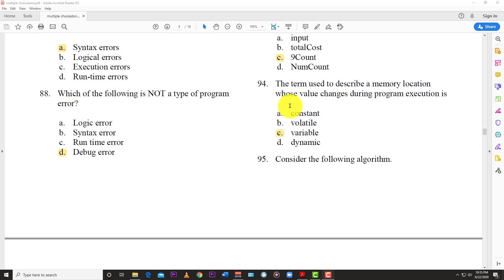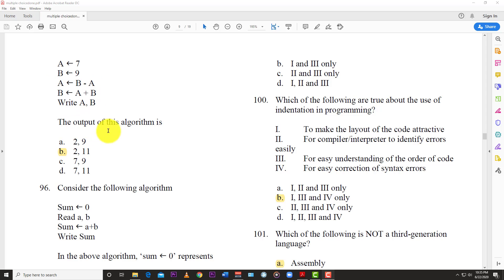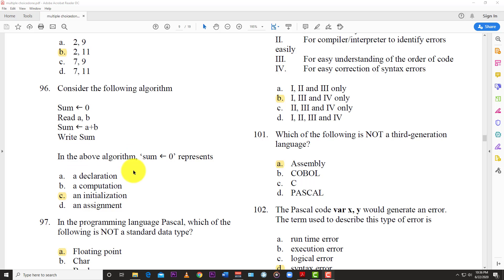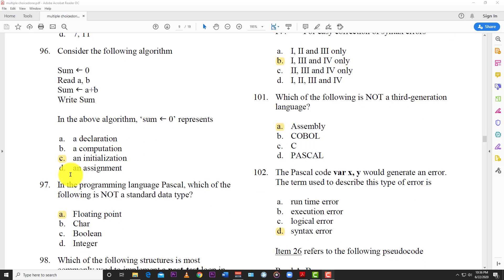Number 94: The term used to describe a memory location whose value changes during program execution is? And the answer here is C, variable. Question 95: Consider the following algorithm. The output of this algorithm is? And so the answer here is B, 2 and 11. Because you have A 7, B 9, A equals B minus A, A equals B, A plus B, write A, B. And so the answer here is 2 and 11. Question 96: Consider the following algorithm. So you realize there's a lot of algorithm questions here. We have sum 0, read A, B, sum equals A plus B, write sum. In the above algorithm, sum 0 represents C, an initialization.